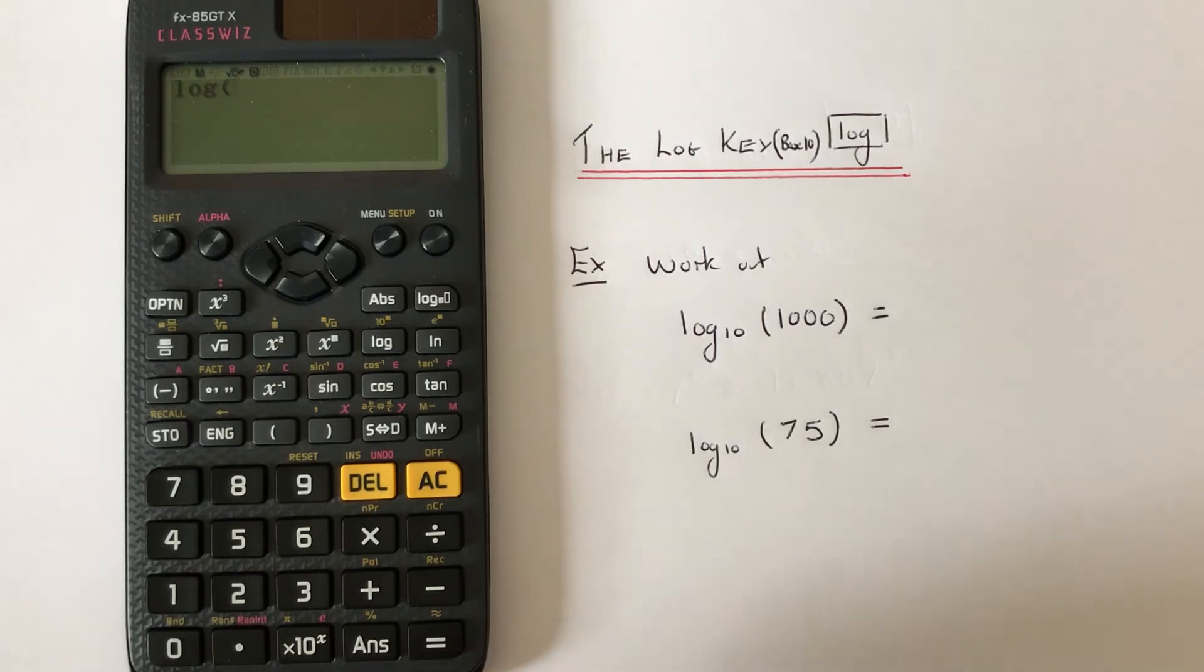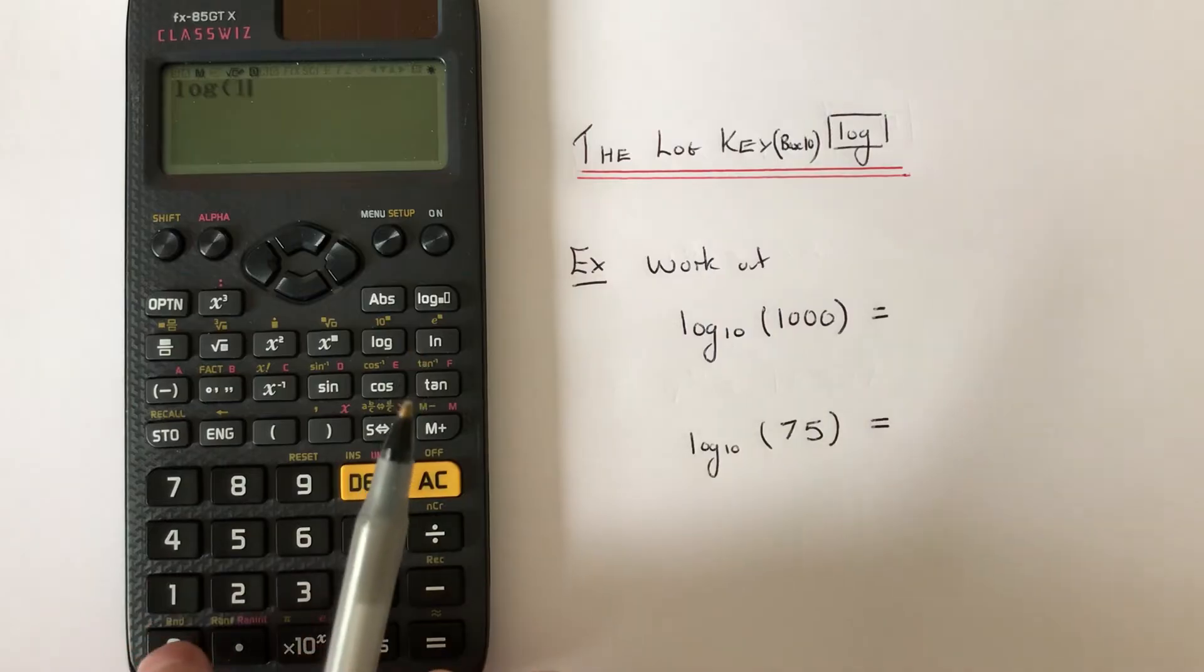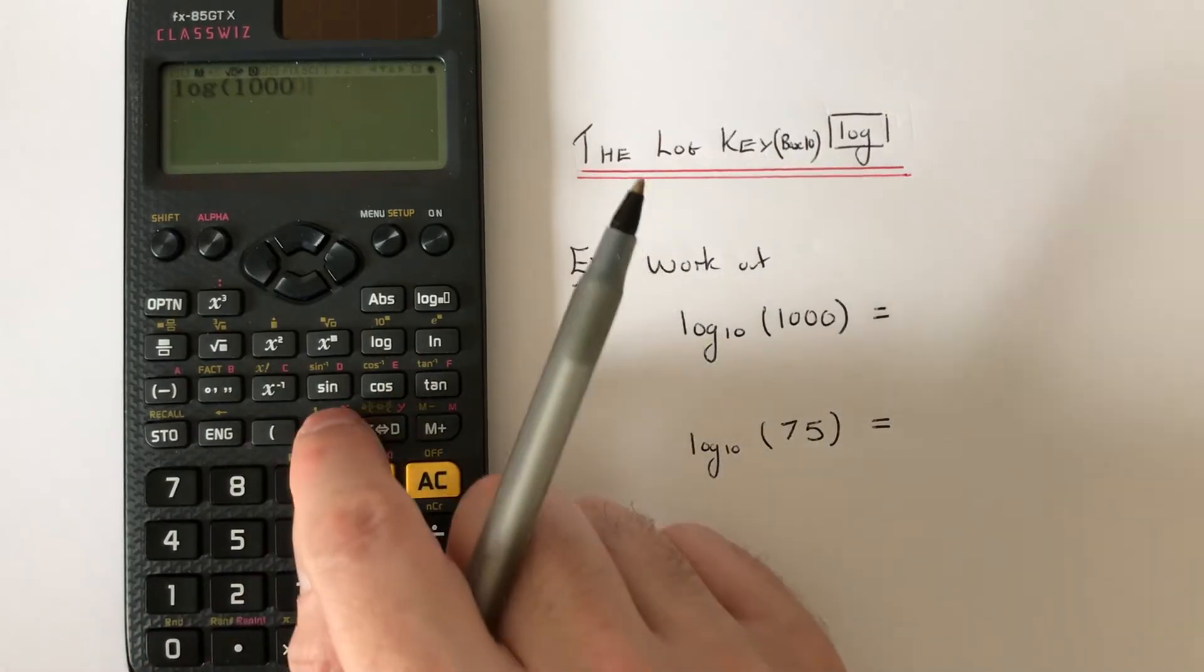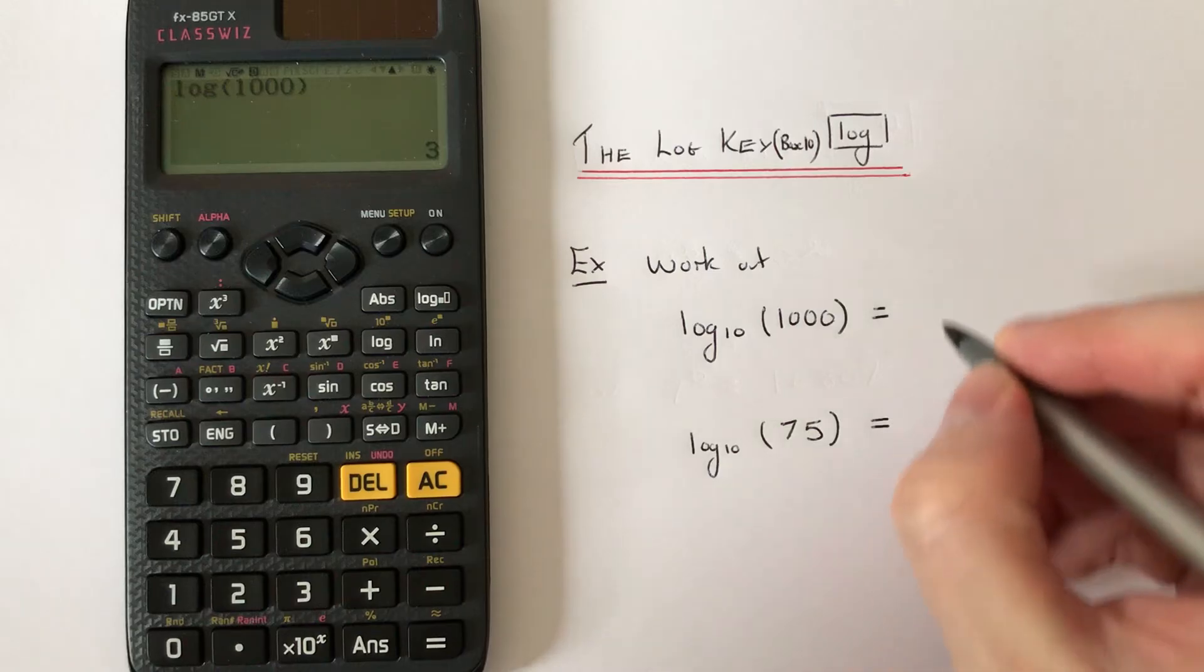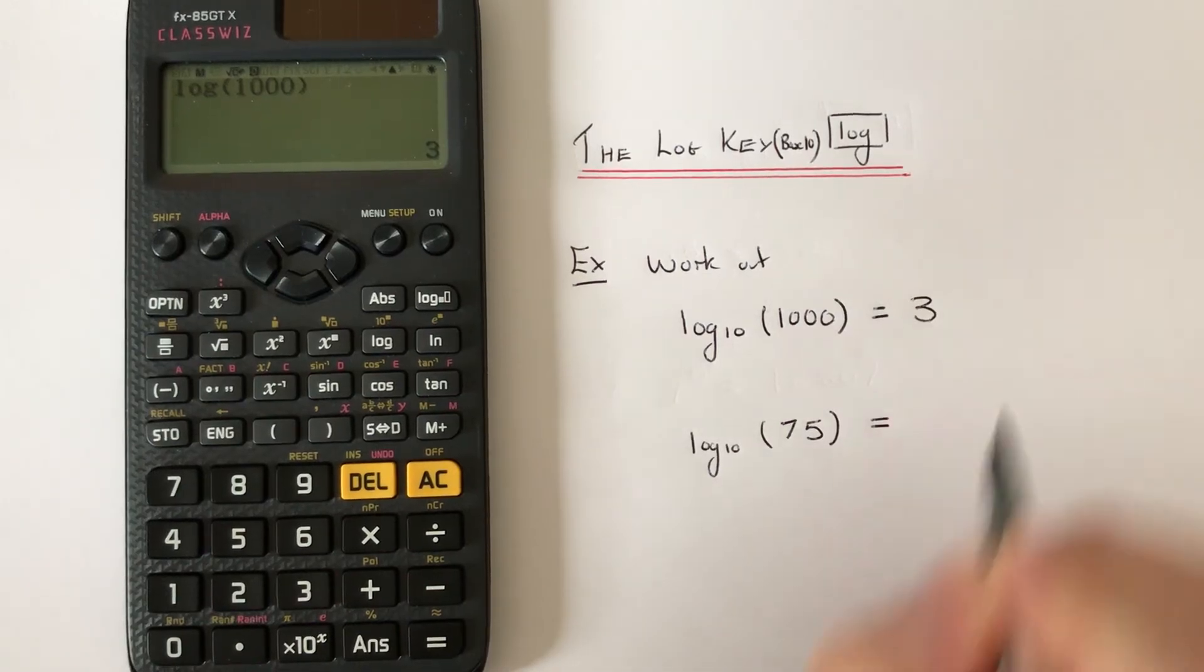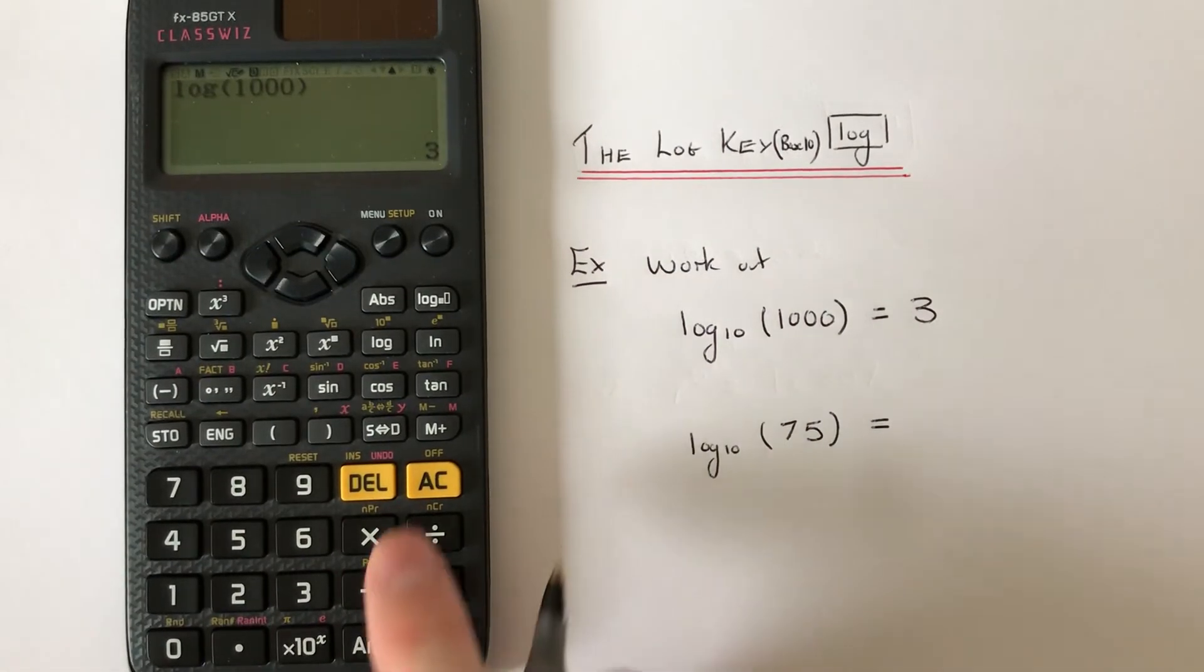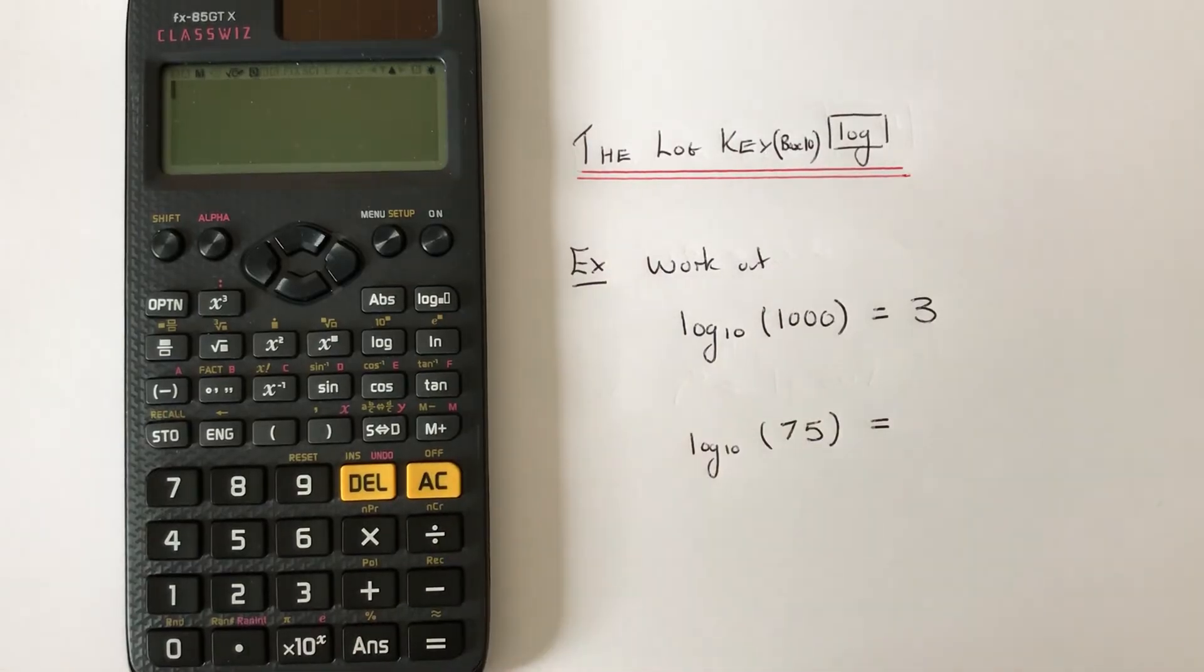It's not going to work out any other logarithm. So type in a thousand, press the equals key, and we get the answer three. Next, this time we've got log base 10 of 75.